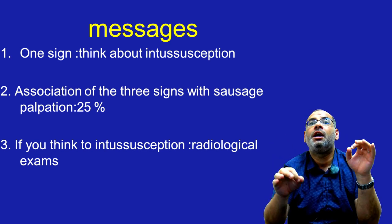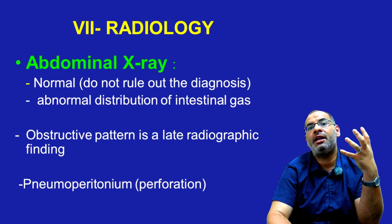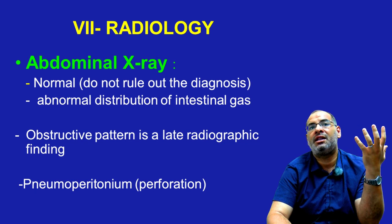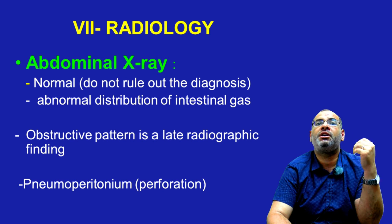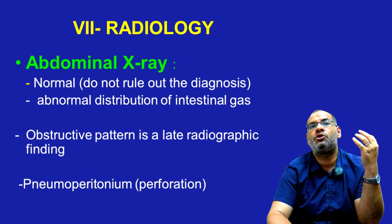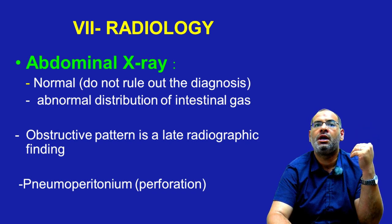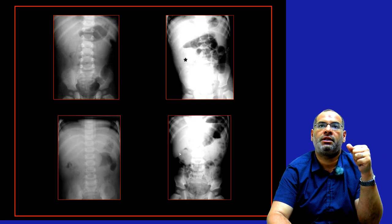If you think of intussusception, please prescribe your radiologic exam urgently. The abdominal X-ray is less and less done because it is a source of irradiation. But if it is done, a normal result does not rule out the diagnosis — you can sometimes have an abnormal disruption of intestinal gas. The most efficient radiologic exam to assess the diagnosis of intussusception is abdominal ultrasound.